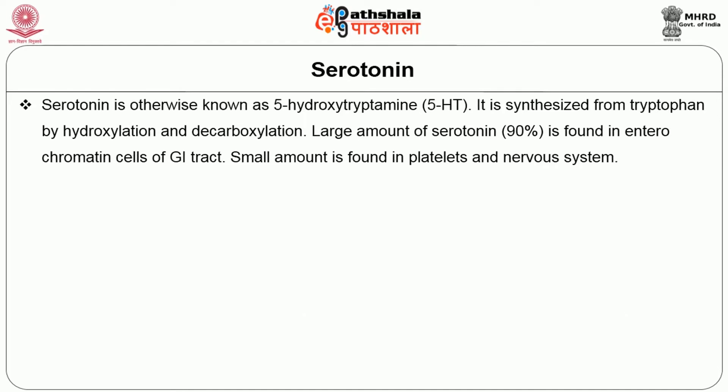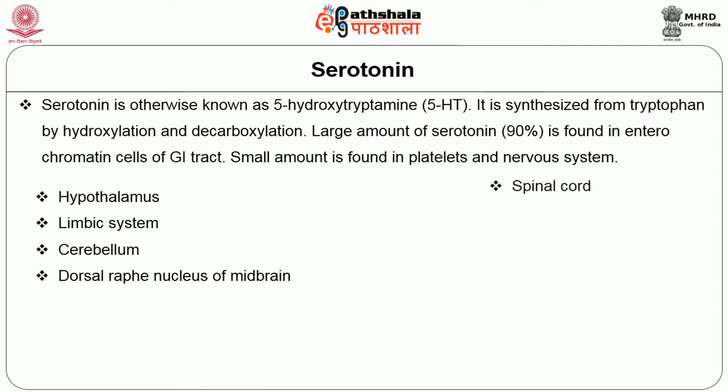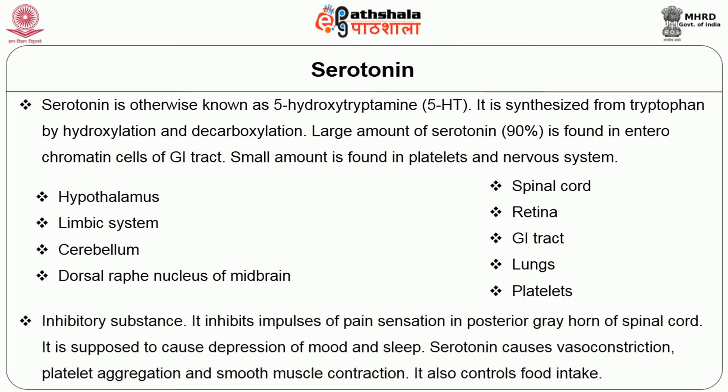Coming to serotonin, otherwise known as 5-hydroxytryptamine. Serotonin is synthesized from tryptophan by hydroxylation and decarboxylation. About 90% of serotonin is found in the enterochromaffin cells of the GI tract; a small amount is found in platelets and the nervous system. It is secreted in the hypothalamus, limbic system, cerebellum, dorsal raphe nucleus of midbrain, spinal cord, retina, GI tract, lungs, and platelets. Serotonin is an inhibitory substance — it inhibits pain sensation impulses in the posterior grey horn of the spinal cord, is supposed to cause depression of mood and sleep, causes vasoconstriction, platelet aggregation, smooth muscle contraction, and also controls food intake.